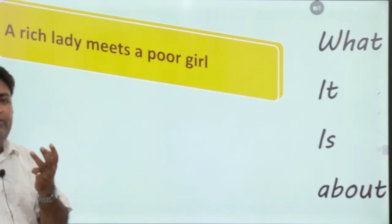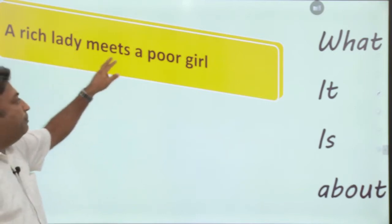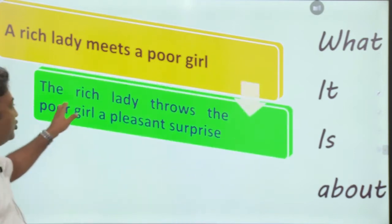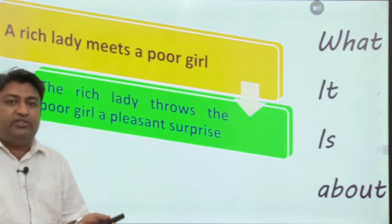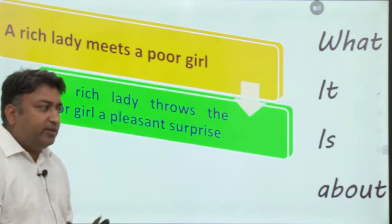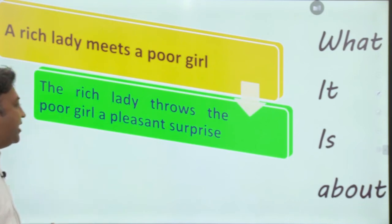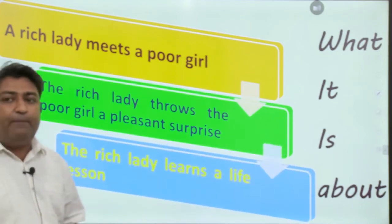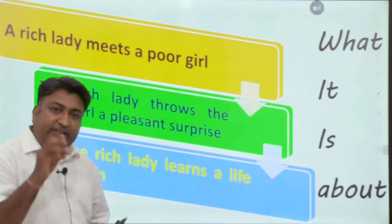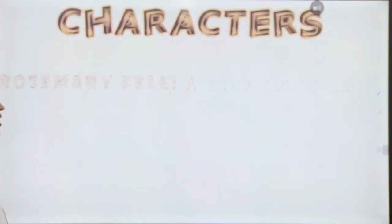In very simple lines, what is this story about? A rich lady meets a poor girl, just like a fairy tale. The rich lady throws the poor girl a pleasant surprise — similar to Cinderella or other fairy stories where a godmother figure helps a poor character. But what happens in the end is more important: the rich lady learns a life lesson, which makes this story different from traditional fairy tales.